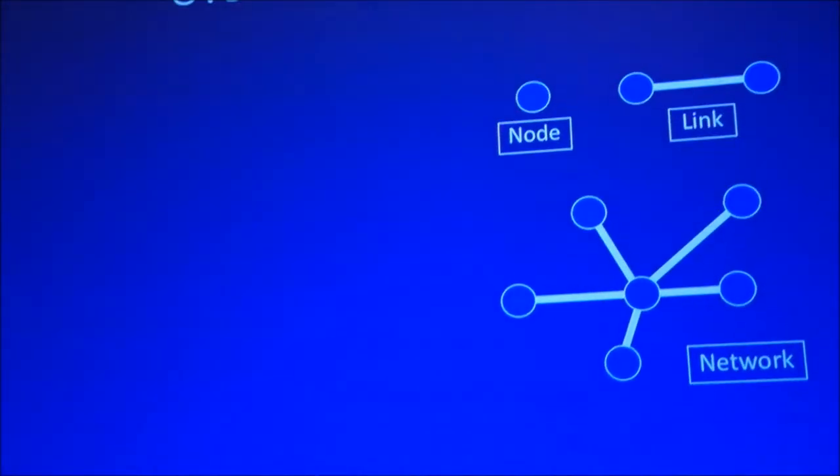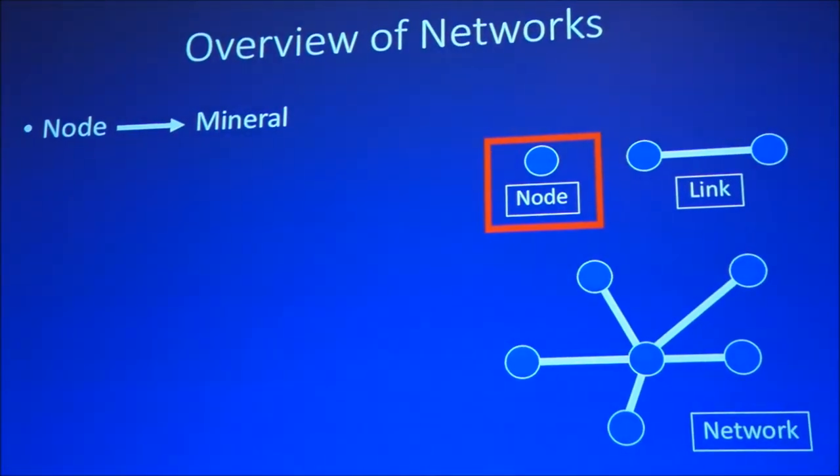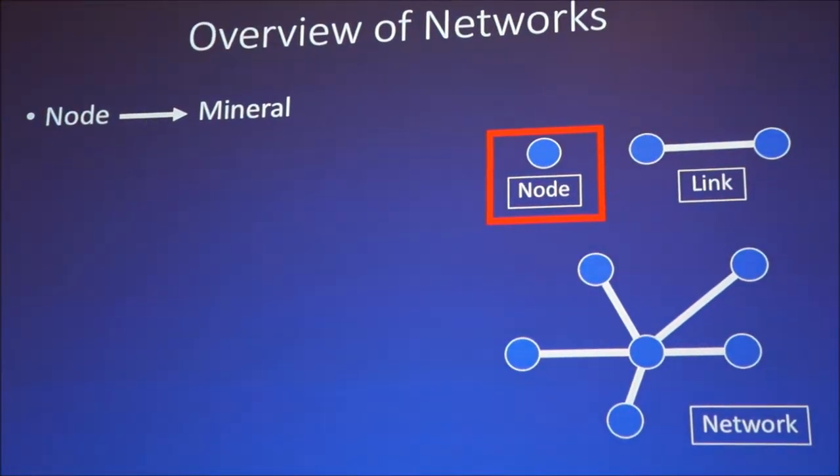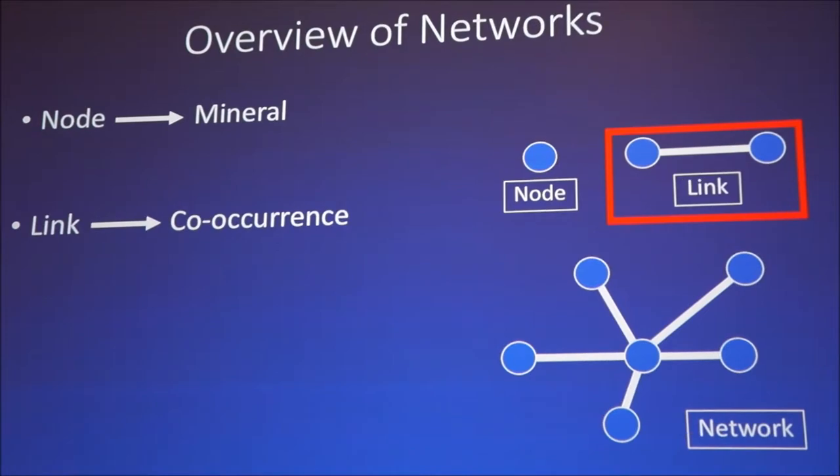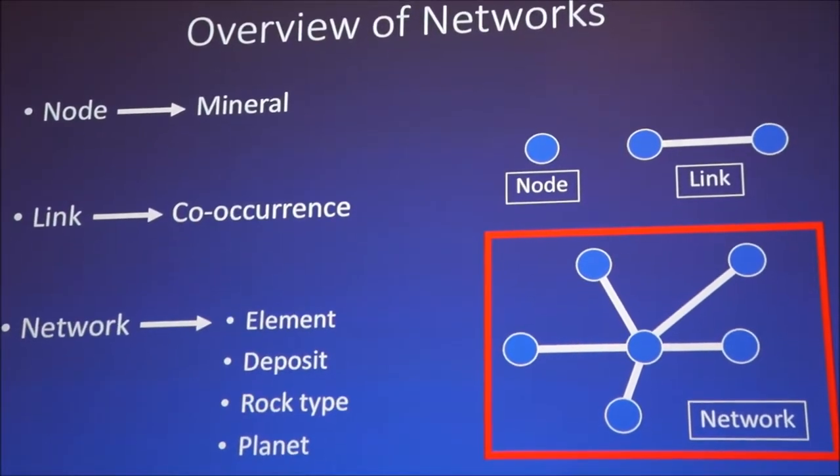So to start, networks are made up of nodes and links. In our case, network nodes are representing minerals, so each individual mineral species is represented by a node, and the links between them represent the coexistence of two mineral species. These come together to comprise a network.